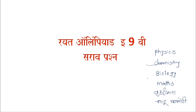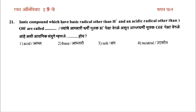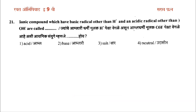The first question is: ionic compounds which have basic radicals other than H⁺ and acidic radicals other than OH⁻ are called what?